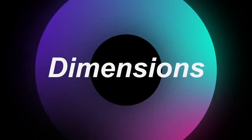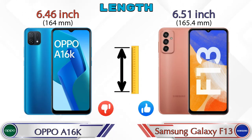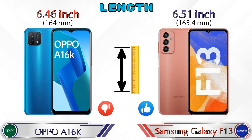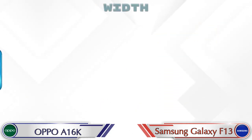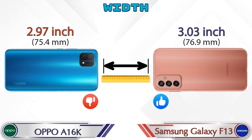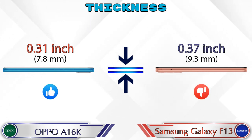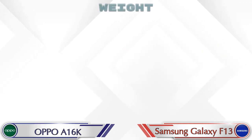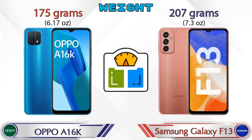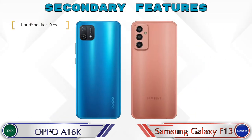Now let's check the dimensions. The length of the A16k is 6.46 inches and the Galaxy F13 is 6.51 inches. Width: the A16k is 2.97 inches and the Galaxy F13 is 3.03 inches. Thickness: the A16k is 0.31 inches and the Galaxy F13 is 0.37 inches, which is bigger than the A16k. Weight: the A16k is 175 grams and the Galaxy F13 is 207 grams, which is heavier than the A16k.